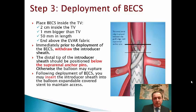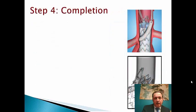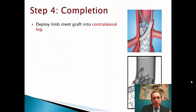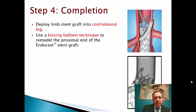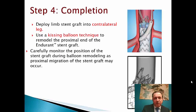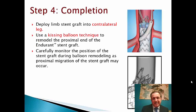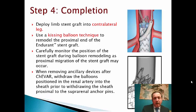For deploying the balloon-expandable stent, don't forget to reinsert the long sheath inside the target vessel again. After that, we deploy the contralateral limb of the EVAR, then perform kissing balloon technique — be very careful because the device has a tendency to move at this time. When you remove the balloon from the renal artery, it's very important to resheath again, because otherwise the anchors of the suprarenal fixation can capture the balloons.